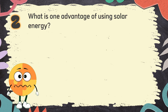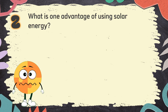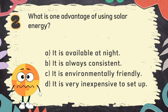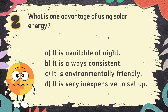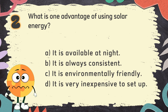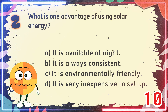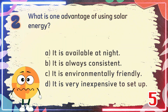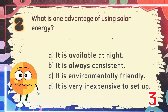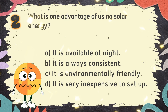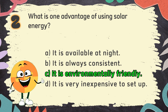Number 2: What is one advantage of using solar energy? The choices are: A. It is available at night, B. It is always consistent, C. It is environmentally friendly, D. It is very inexpensive to set up. The correct answer is C. It is environmentally friendly.